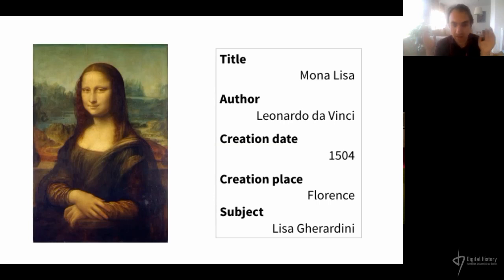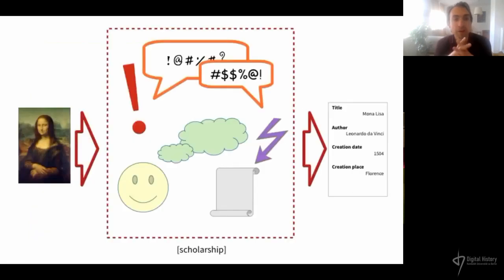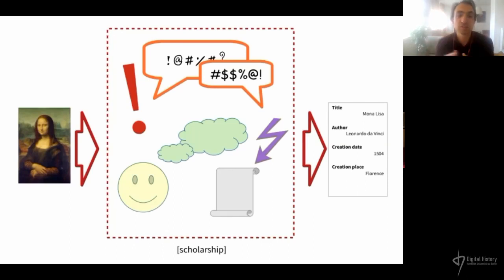If we do this, we have produced something that is maybe factually correct. Sometimes those records are wrong, but let's assume for a second that they are correct. Even if they are correct, what do they tell us about the 500 years of scholarship that exist on this painting? Basically nothing. What we are doing is taking the most interesting part of the scholarship — all the discussions, all the uncertainties, all the research — and turning it into a purified, fossilized, sterile set of data.